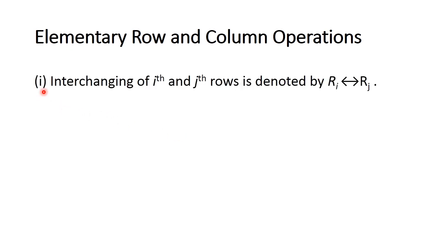Now let us learn elementary row and column operations. There are three elementary row and column operations. The first one is interchanging of any two rows or columns. We can interchange any two rows and any two columns. That is denoted by Ri interchanging to Rj.